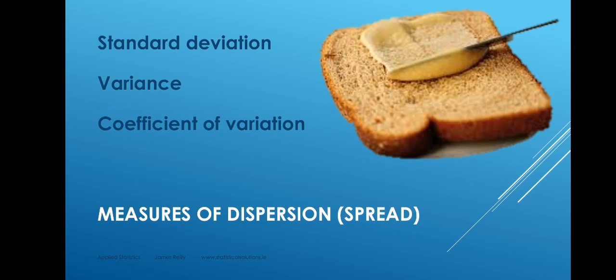The standard deviation is our preferred measure of dispersion or spread. The standard deviation squared is called the variance, and it is also a useful measure. Variances can be added together — for example, if trees vary in height due to both species and age, we can add the variance due to age and the variance due to species to get the total variance, which standard deviations cannot do. However, variance is not very intuitive: if standard deviation is measured in metres, variance is measured in metres squared, which is not intuitive when talking about tree heights. So standard deviation is our preferred measure.